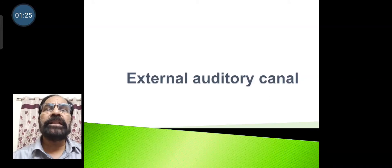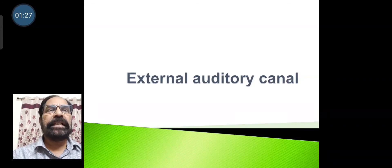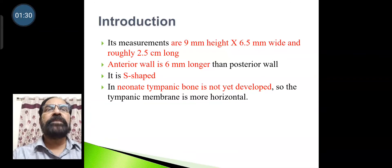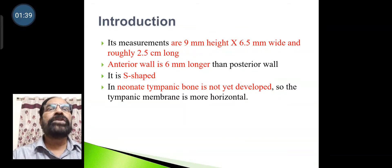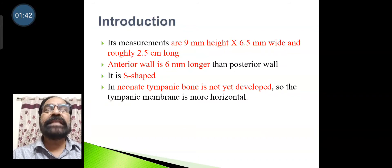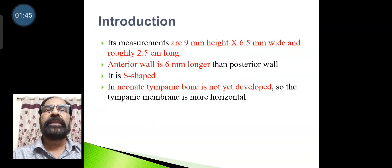Moving to the external auditory canal, its measurements are 9 mm in height, 6.5 mm wide, and 2.5 cm (25 mm) long. The anterior wall is 6 mm longer than the posterior wall. It is S-shaped.